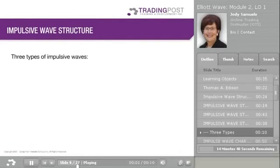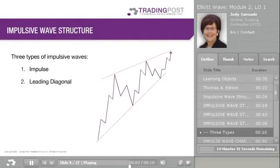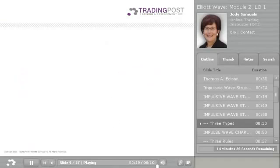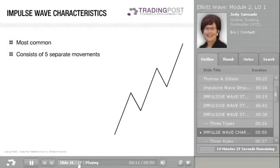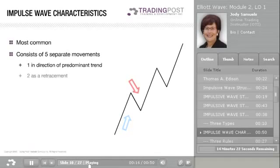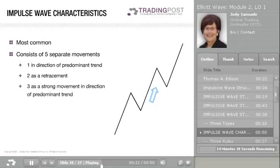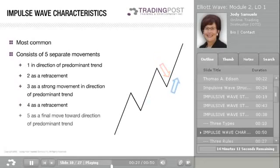There are three types of impulsive waves: impulse, the leading diagonal, and the ending diagonal. Impulses are the fundamental element of Elliott wave patterns and the most common of the impulsive wave structures. Impulses consist of five separate movements: Wave 1 in the direction of the predominant trend, Wave 2 as a retracement, Wave 3 as a strong movement in the direction of the predominant trend, Wave 4 as a retracement, and Wave 5 as a final move toward the direction of the predominant trend.